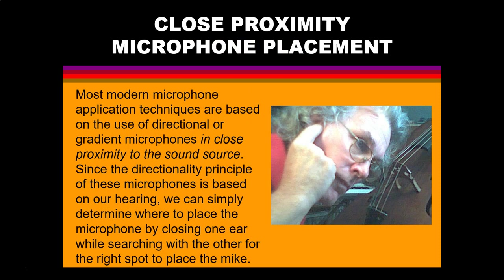Close proximity in microphone placement is something to be mindful of in sound recording and reinforcement. The closer you put the microphone to a sound source, the more isolation you will have from other sounds and instruments in the area. But as you get closer, there is a proximity effect — such as with cardioid microphones, you get bass or low frequency prominence. We can sometimes simulate what the microphone will hear by plugging one ear and putting the other ear close to where you want to place the microphone, then moving your ear around until the sound you're hearing is the sound you intend to record.